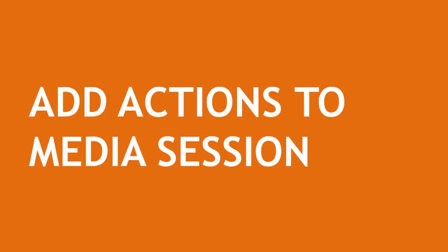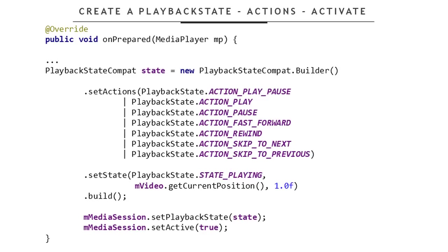The next step is to add the actions to the Media Session. In the OnPrepared method where we initialize the Media Session, we create a new playback state variable. This component tells the underlying Media Session what the current status of playback is — for example, playing or paused — and also defines which actions can be performed. This is why we use the SetActions method to set all the actions we want our application to perform, like play, pause, fast-forward, etc. We then set the playback state to STATE_PLAYING, passing the current position (which defaults to zero) and a float indicating playback speed, with one meaning normal speed. Finally, we pass the playback state to the Media Session and activate it using SetActive.